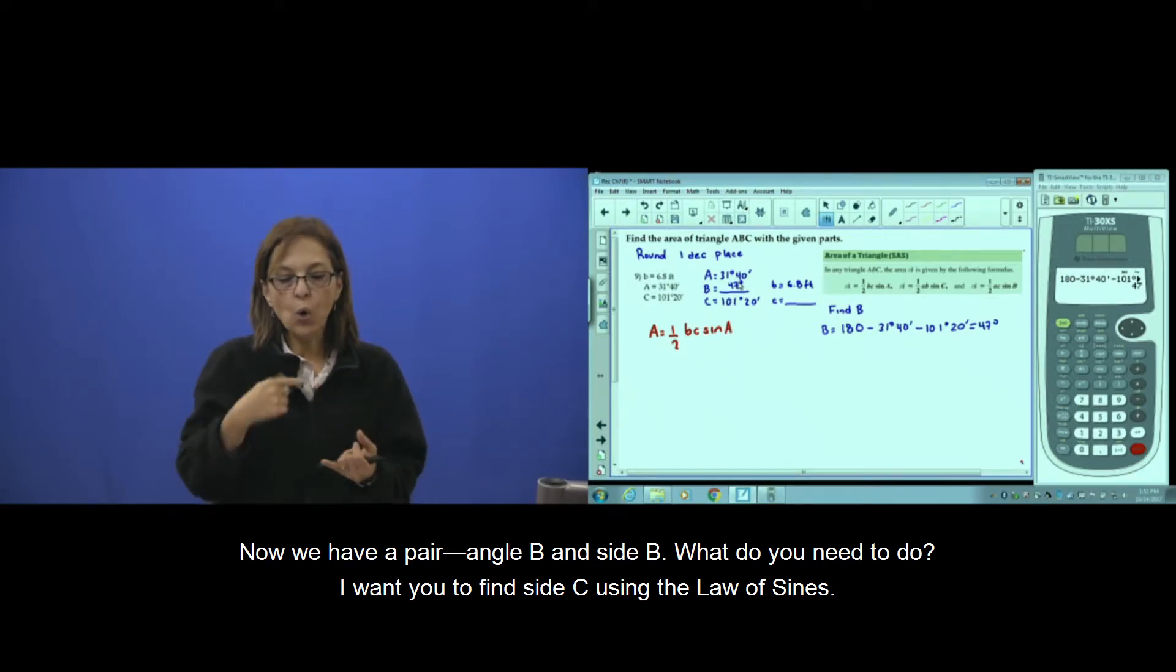Now we have a pair—angle B and side B. What do you need to do? I want you to find side C using the law of sines.